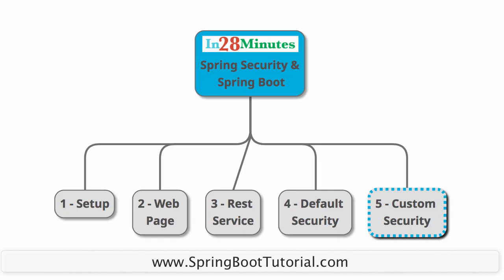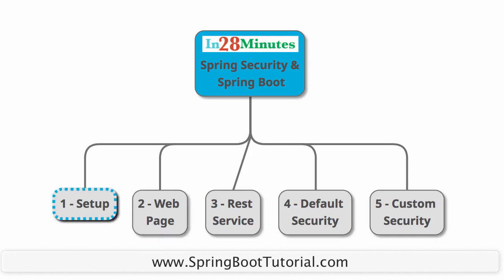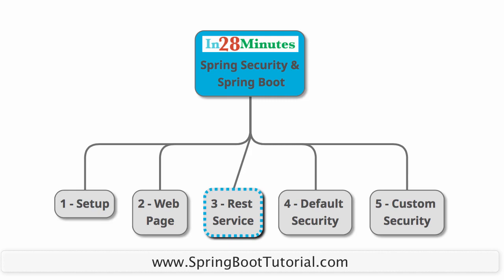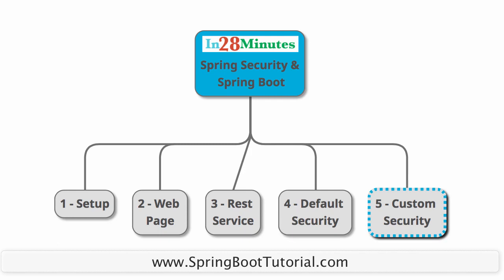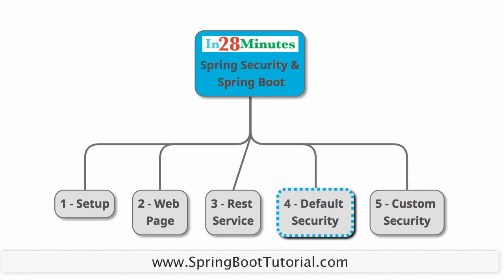Welcome to this video where we talk about securing your Spring Boot applications - web applications and REST web services - with Spring Security. We'll look at it in five steps: setting up a basic application using Spring Initializr, creating a simple web page to secure, creating a dummy REST service to secure, configuring Spring Security to see its default basic authentication, and finally doing custom security configuration with users, roles, and URL protection.